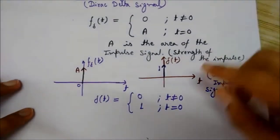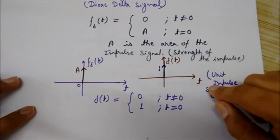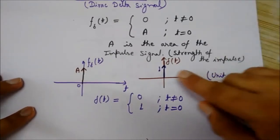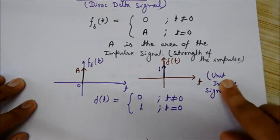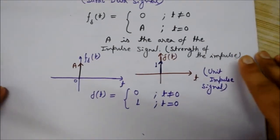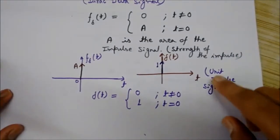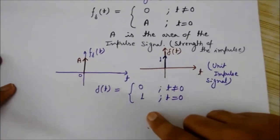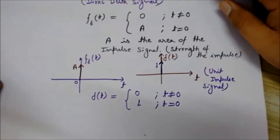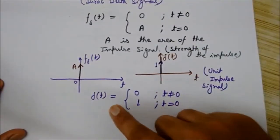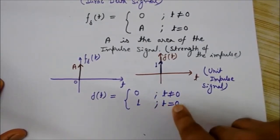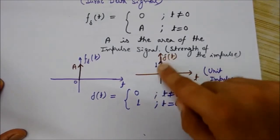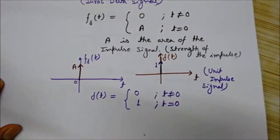If the area of the impulse signal is one — that is, we take 'a' as one — then it would be called the unit impulse signal. So the unit impulse signal can be defined as delta(t), where delta(t) equals zero for t not equal to zero, and its value is one at t equals to zero.